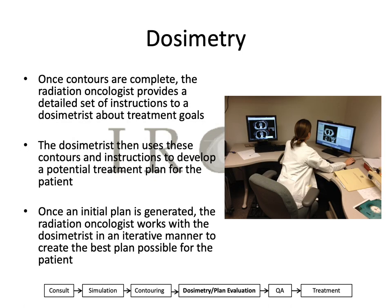Once the contours are complete, the radiation oncologist provides a detailed set of instructions to a dosimetrist about the treatment goals. These can include the dose to the tumor, the constraints for the organs at risk, as well as treatment technique and any other specifics of the case. The dosimetrist will then use these, along with the contours, to develop a potential treatment plan. Based on this initial plan, the radiation oncologist will work with the dosimetrist in an iterative manner to create the best possible plan for the patient.